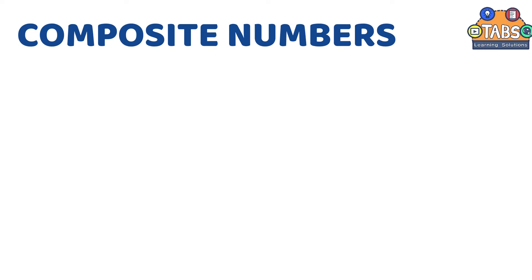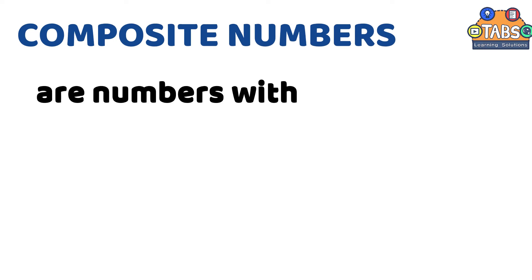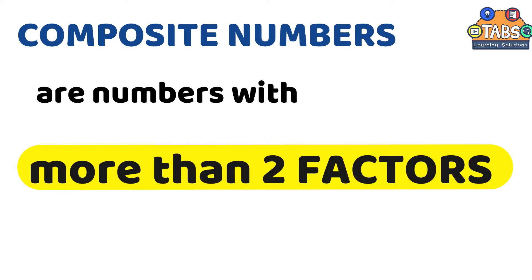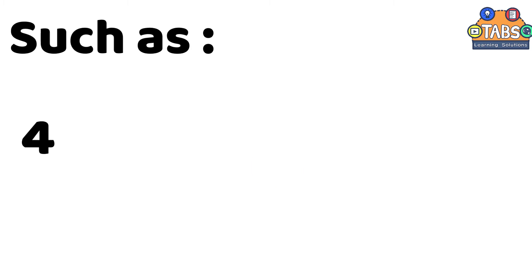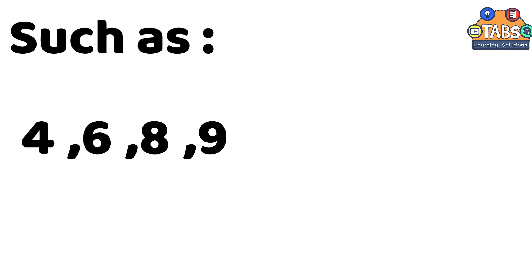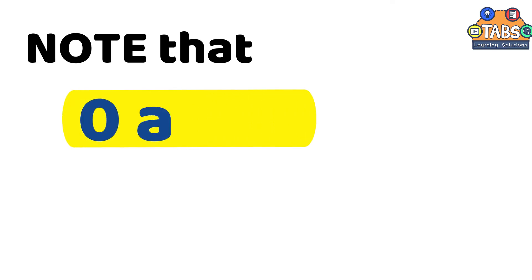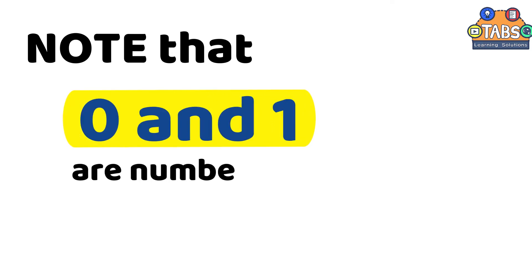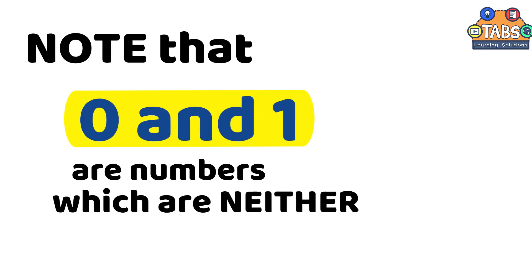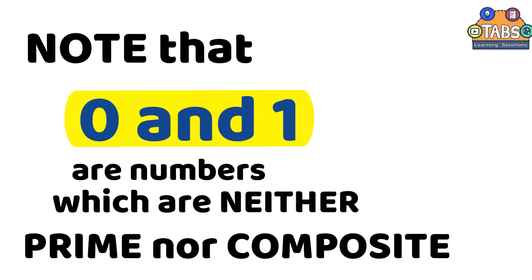While composite numbers are numbers with more than two factors, such as 4, 6, 8, 9, 10, 12, and so on. Take note that 0 and 1 are numbers which are neither prime nor composite.